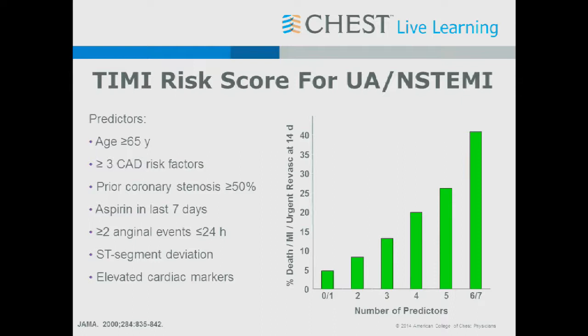The TIMI risk score is one available risk score you can calculate from clinically available data. You get a point for each risk factor: older age, known risks for coronary disease, known coronary disease, recent aspirin use, multiple anginal events, ST segment changes, and elevated biomarkers. The number of predictors escalates your risk by several fold. The highest-risk patient is one with chest pain, positive biomarkers, ST segment deviations, and marginal hemodynamics.